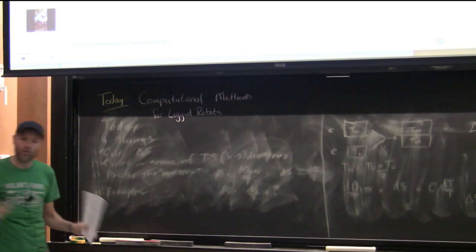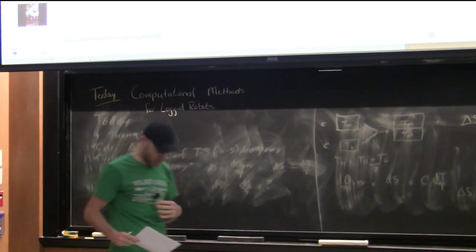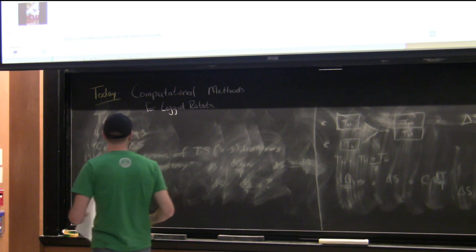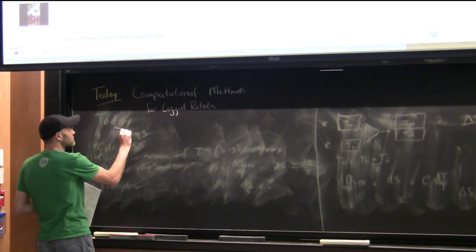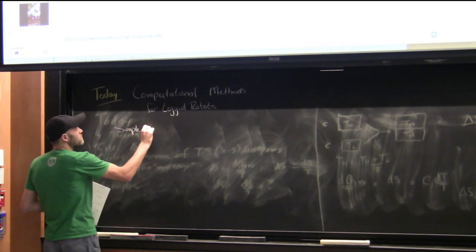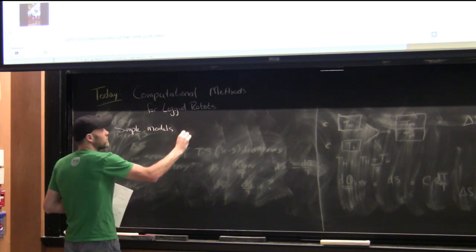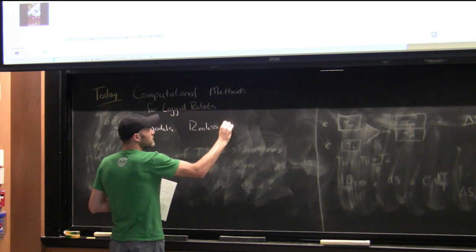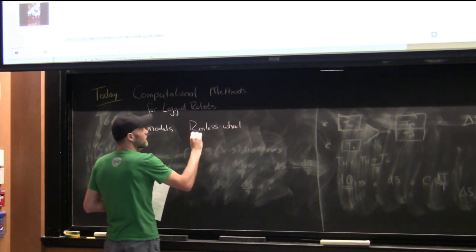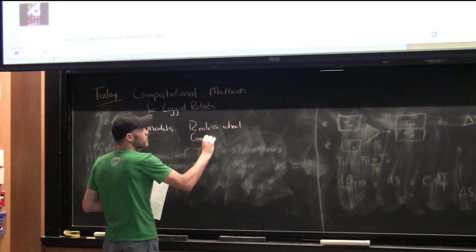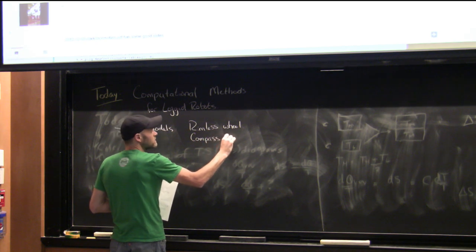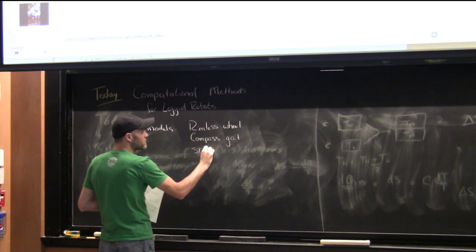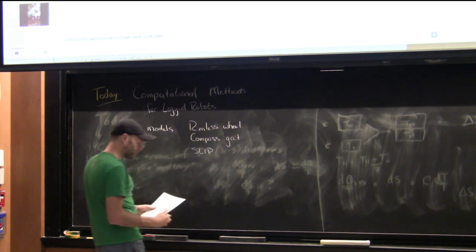Over the last two lectures we started talking about walking robots. We talked first about the simple models — the rimless wheel as the simplest model of walking, the compass gait being a little bit more like a walking robot. And then we used the SLIP model, the spring-loaded inverted pendulum model, for running.